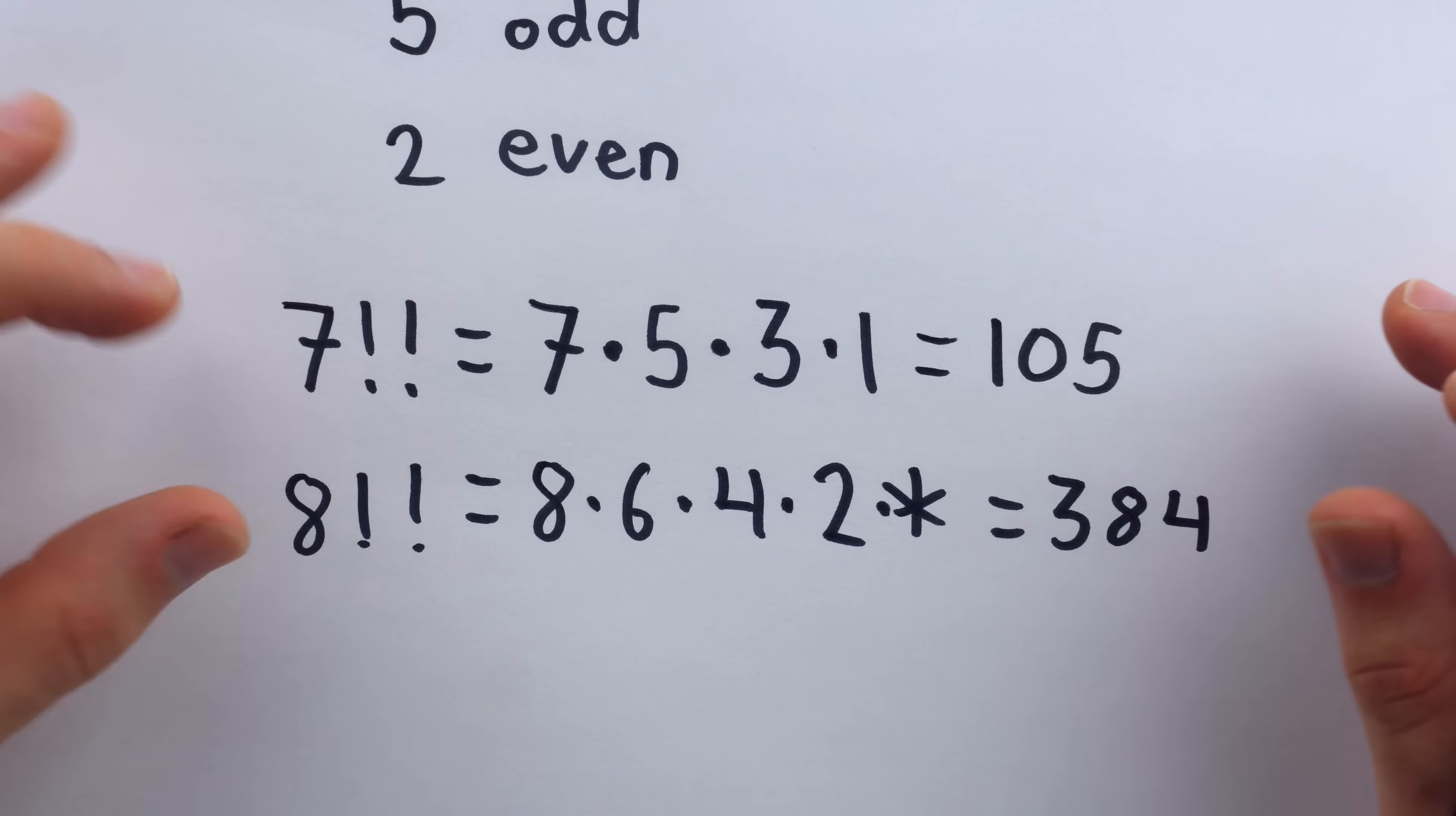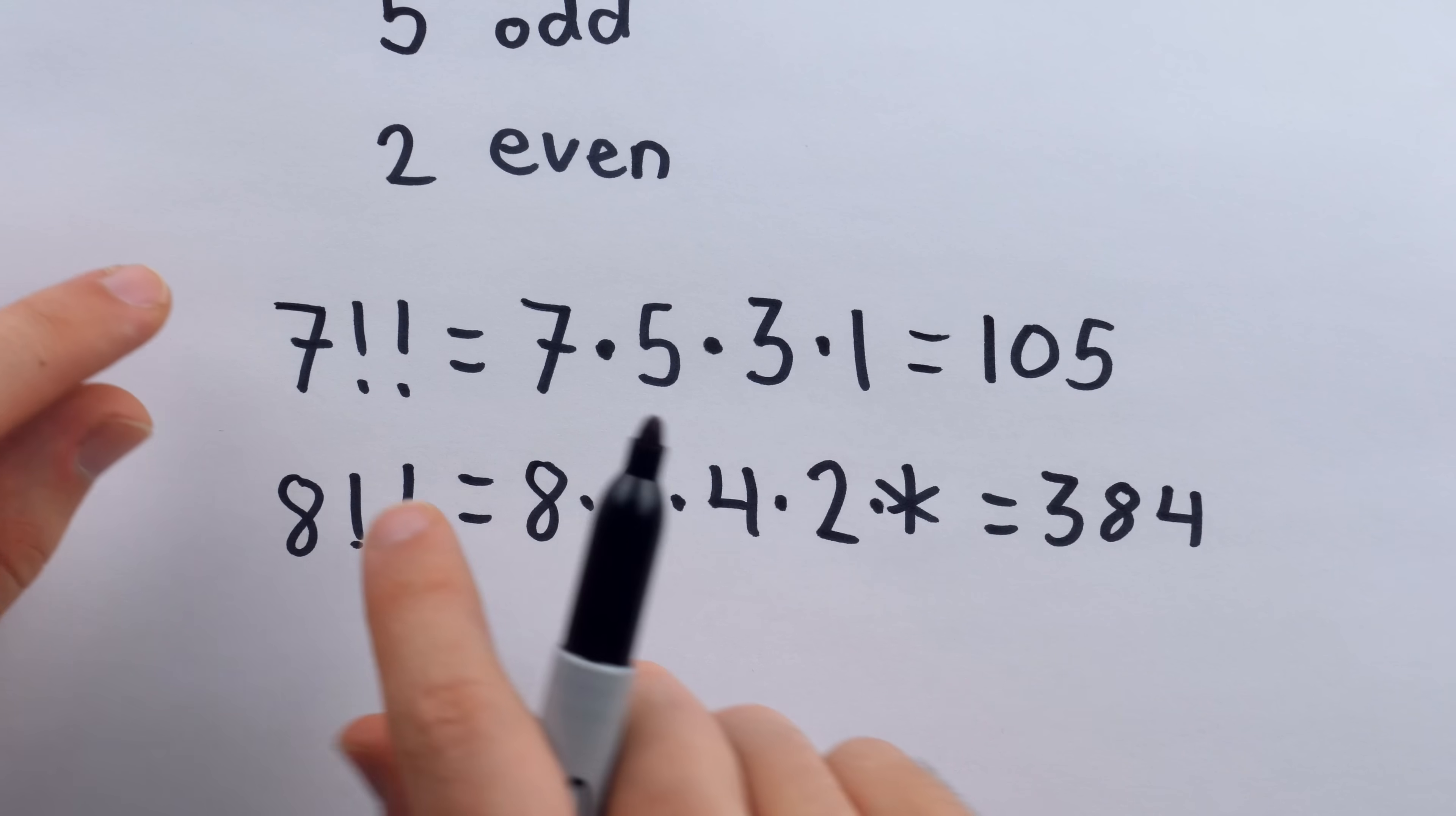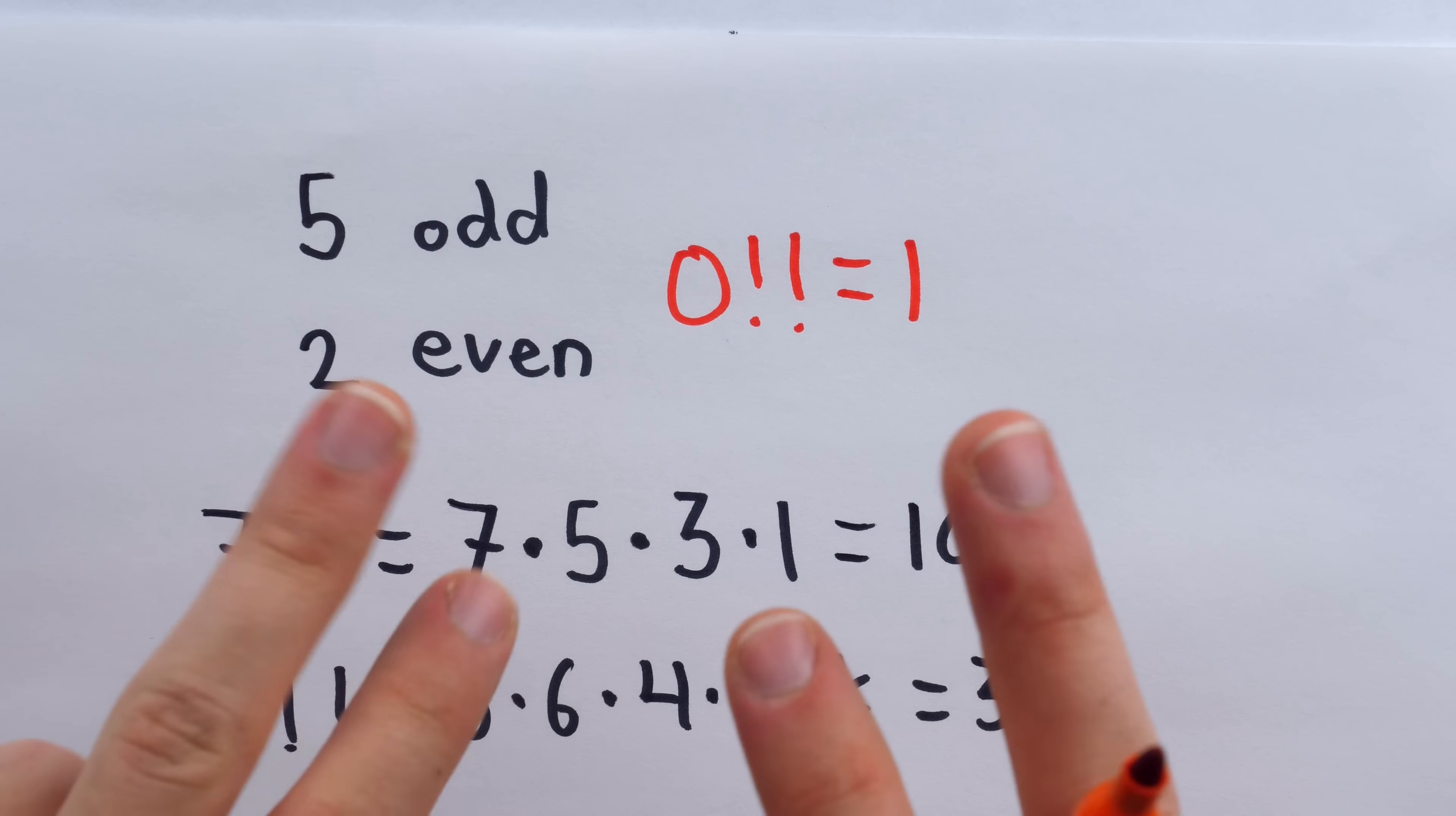So those are two examples of the double factorial. You could probably bang out several others yourself. Hopefully it makes sense how the double factorial is defined. You just take a positive integer and it works just like the normal factorial except you'll skip the numbers that don't share parity with the original number. Since 7 is odd, we just have the odds here. Since 8 is even, we just have the evens. And you may be wondering about this. For 0, the double factorial is once again defined to equal 1. It's called an empty product.